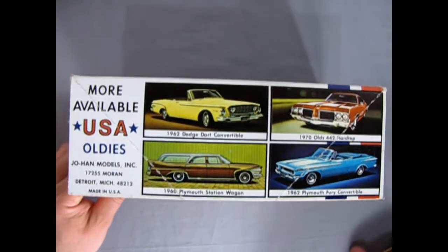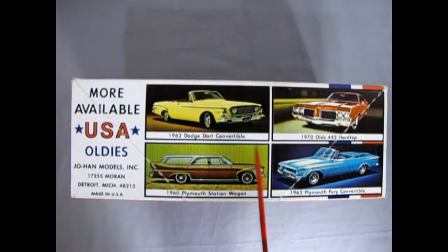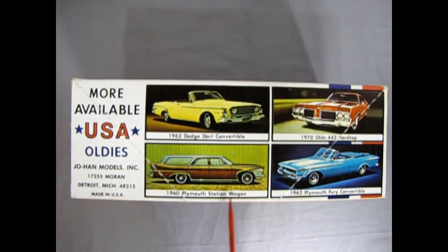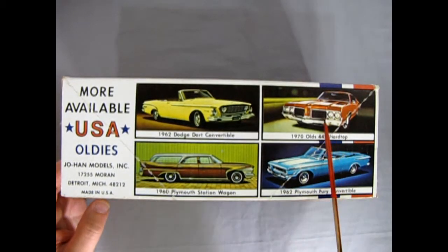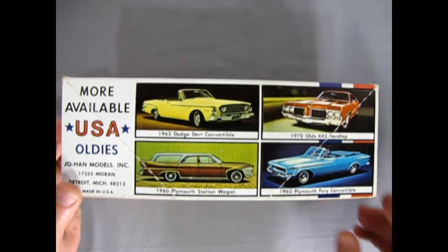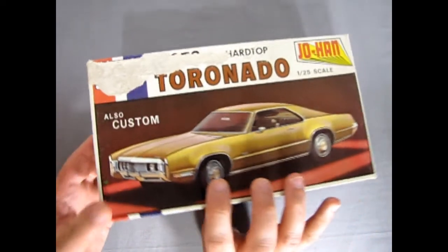Here on this side we get to see some more available USA oldies. I've reviewed a couple of these kits. There is the 1960 Plymouth station wagon which I did as a police car review loaned from my friend John, and then this one here was also loaned from my friend John, the 1970 Olds 442 hardtop. I'm not sure where we are in the order of things, I think this was last time's video anyway. You can check it out or wait till next week. At any rate you're gonna be seeing both cars on this channel.